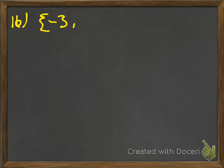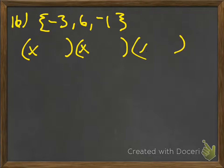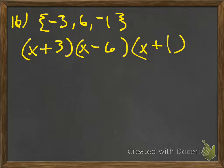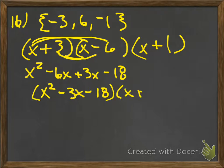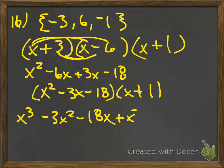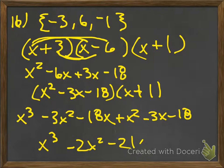Number 16 gives you three roots — all real roots, no i, no square roots. Remember: opposite signs. So negative 3 becomes x plus 3 in the factor; positive 6 becomes x minus 6; minus 1 becomes x plus 1. Multiply: x squared minus 6x plus 3x minus 18. Combine like terms, then multiply by x plus 1. x times x squared is x cubed; negative 3x times x is negative 3x squared; negative 18 times x is negative 18x. Combine your like terms and that's your final answer.